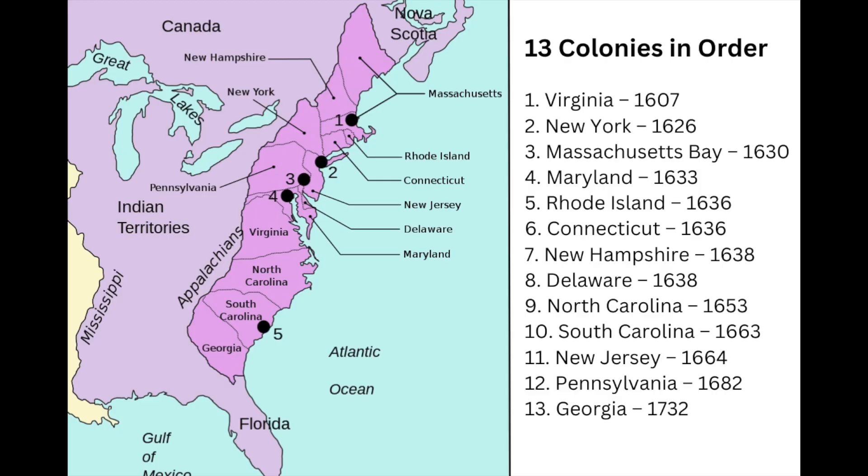Skip a few hundred years and you get the 13 colonies, with the likes of Connecticut, Delaware, Georgia, Maryland, Massachusetts, New Hampshire, New York, New Jersey, Virginia, North Carolina, Pennsylvania, Rhode Island, and South Carolina.